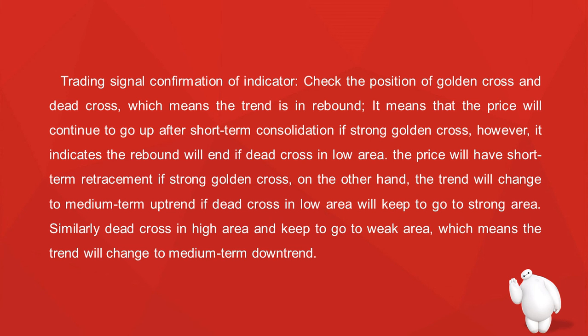Trading signal confirmation: a golden cross in the rebound means the price will continue going up after short-term consolidation if it's a strong golden cross. However, it indicates the rebound will end if a dead cross appears in a low area. A strong golden cross means the price will have short-term retracement. If a dead cross occurs in a low area but keeps going to the strong area, the trend will change to a medium-term uptrend. A dead cross in a high area moving to the weak area means the trend changes to a medium-term downtrend.